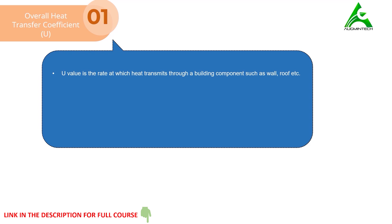The higher value of U means heat can easily flow through the building component, and lower value of U means low heat transmittance. So if the component used in the construction of walls, ceiling, or partition has a higher value of U, it means heat can easily penetrate into the system, and a low value of U means heat won't be able to penetrate. The units used to measure U-Value are BTU per square feet degree Fahrenheit.